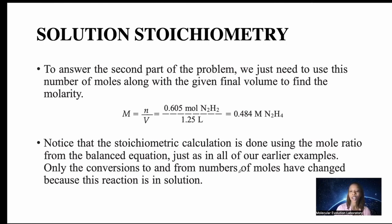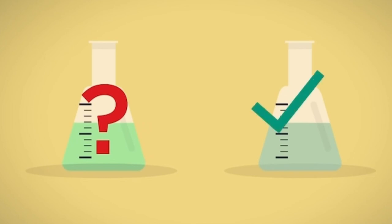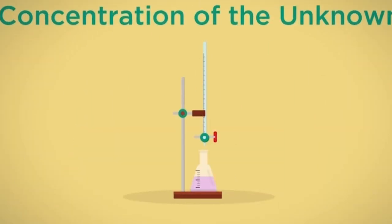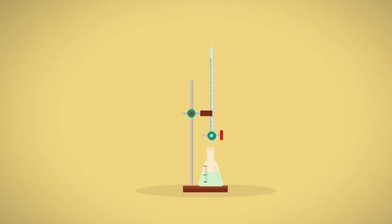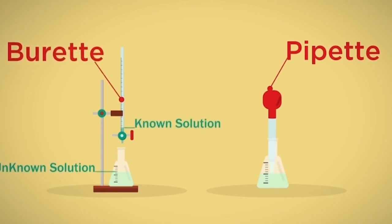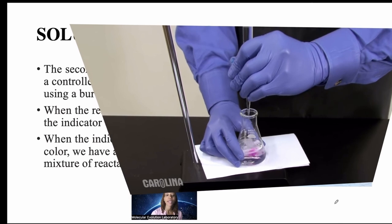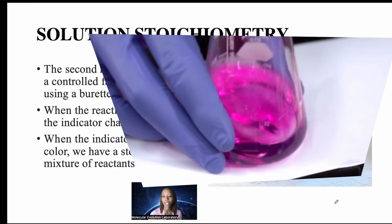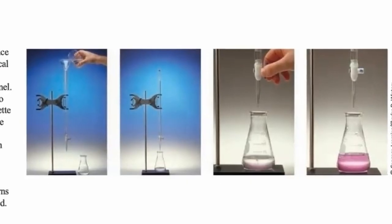The stoichiometric calculation uses mole ratios from a balanced equation; only the conversions to and from moles have changed because the reaction is in solution. A common laboratory technique called titration requires understanding solution stoichiometry. A solution-phase reaction is carried out under controlled conditions so the amount of one reactant can be determined precisely. A measured quantity of one reactant is placed in a beaker or flask; a dye indicator may be added. The second reactant is added in a controlled fashion using a burette, and when the reaction is complete the indicator changes color.